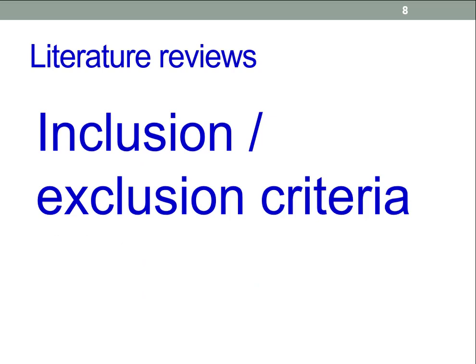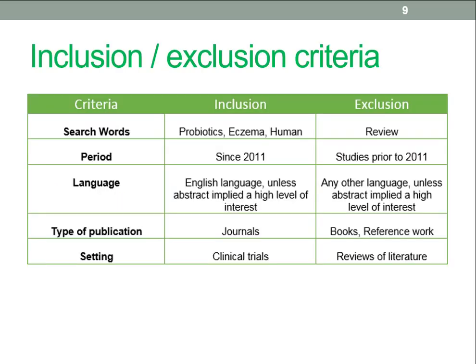You may want to consider inclusion and exclusion criteria — these are the characteristics which make a study eligible or ineligible for inclusion in your review. Date is a common criterion, and in many cases you should only go back five years from the current date unless it's a really important paper. This example includes search terms, but it may be better to document these separately.